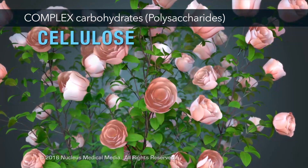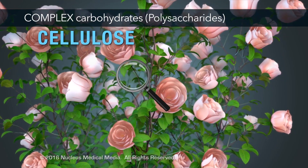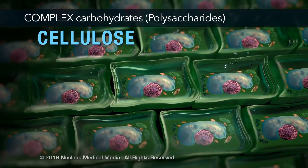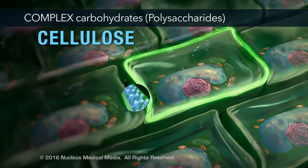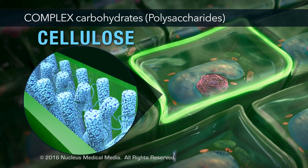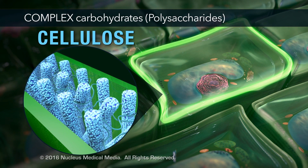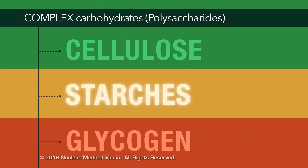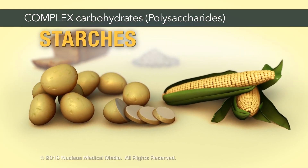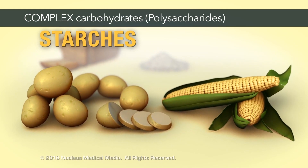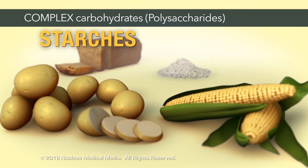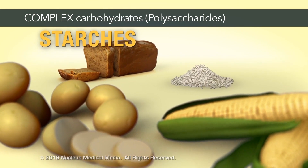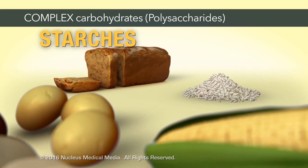Cellulose is found in all plants. It's a structural carbohydrate that is found in the cell wall of every plant cell. Starches are found in many of the foods we eat, such as potatoes and corn. Starches are also found in grains, such as wheat and rice.